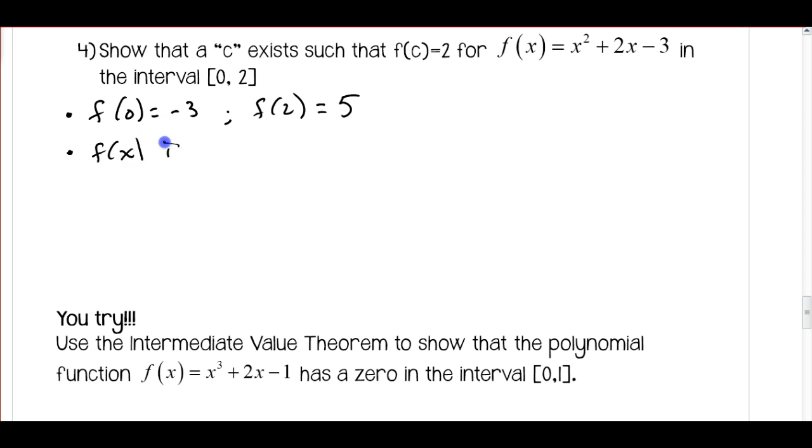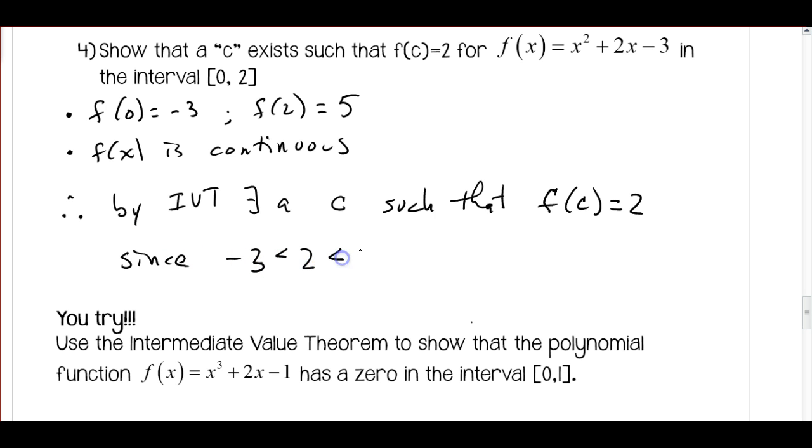And we also know that f(x) is continuous because it's a polynomial. Therefore, since we go from negative to positive and we know that f(x) is continuous, therefore by the Intermediate Value Theorem, there exists a value c such that f(c) is equal to 2, since -3 is less than 2 which is less than 5.